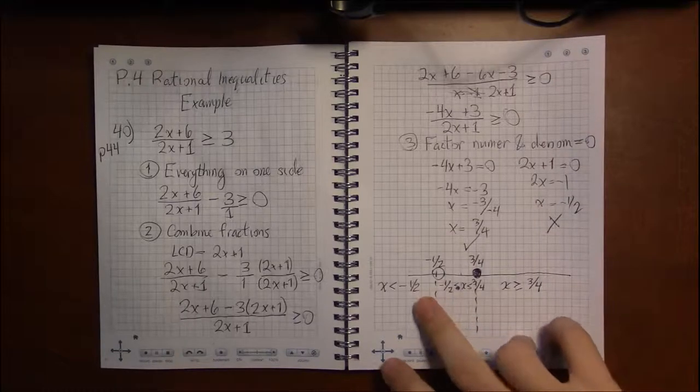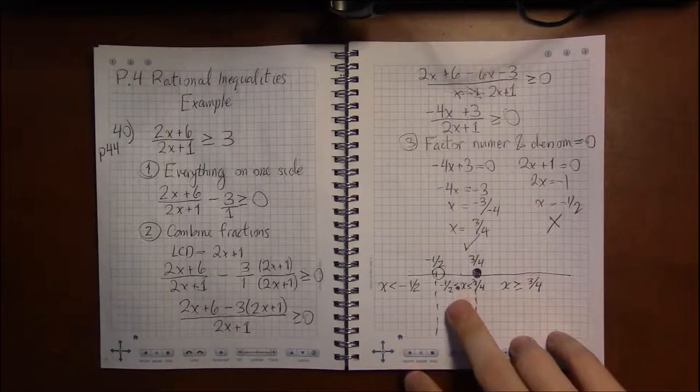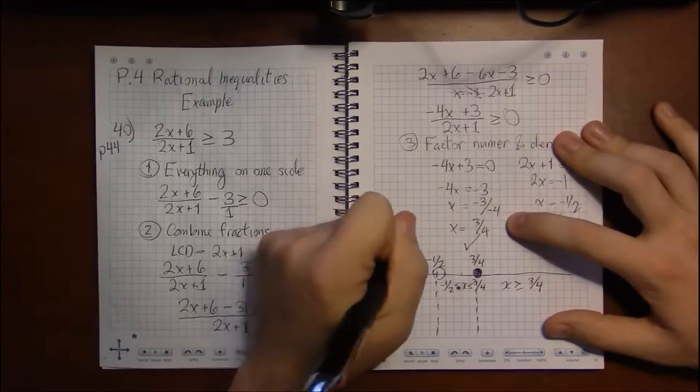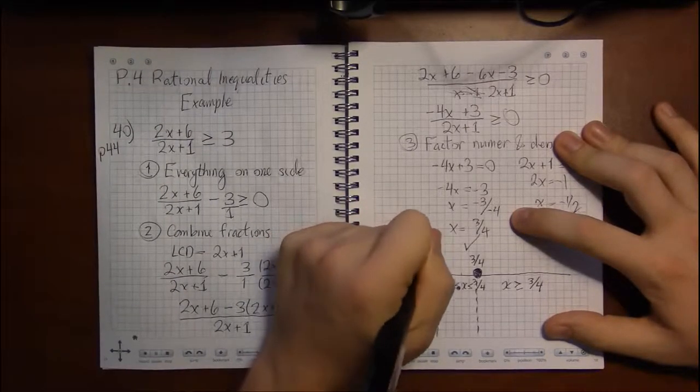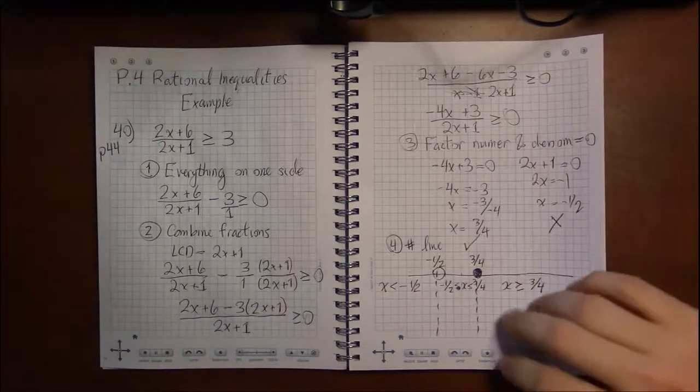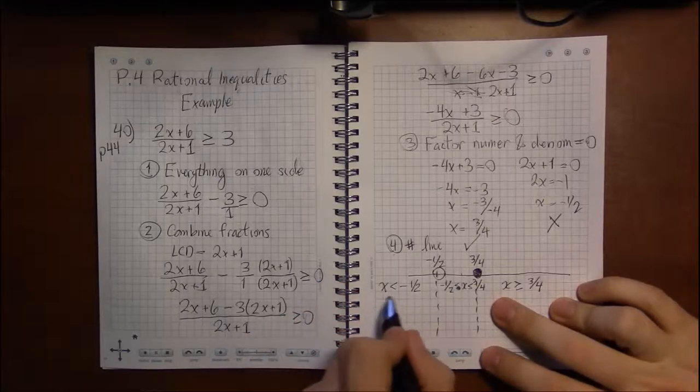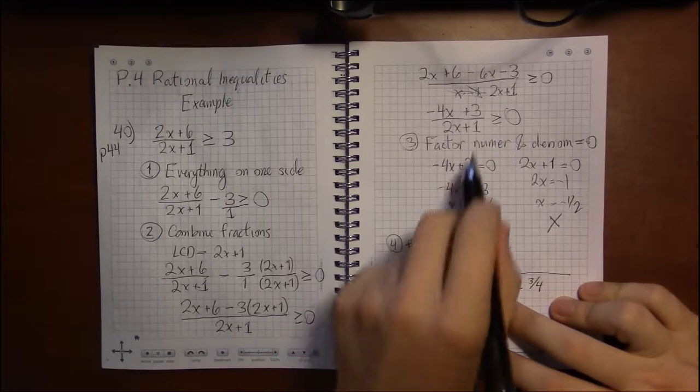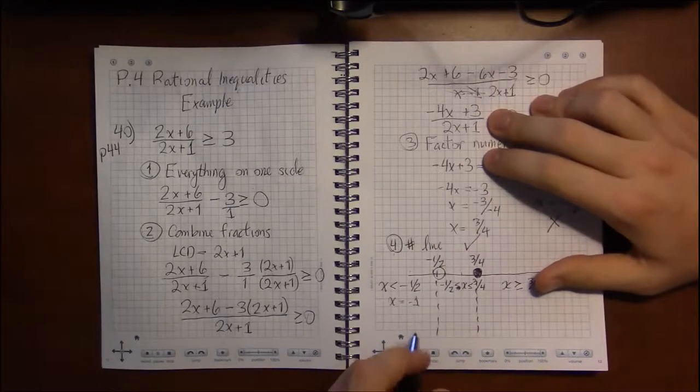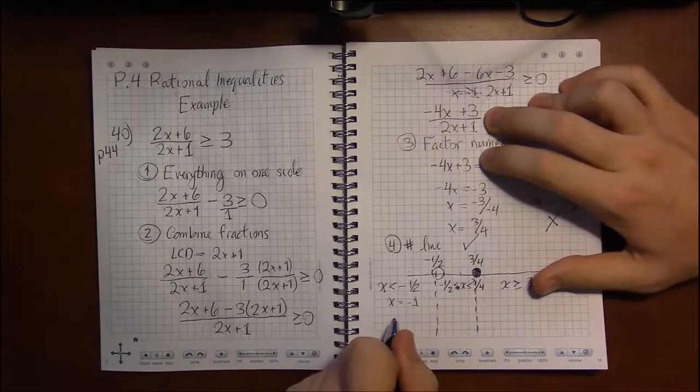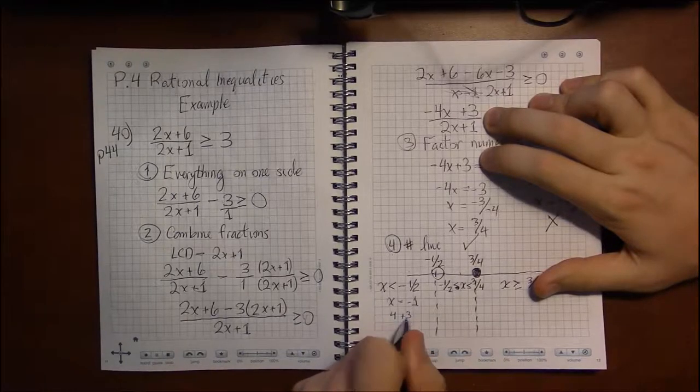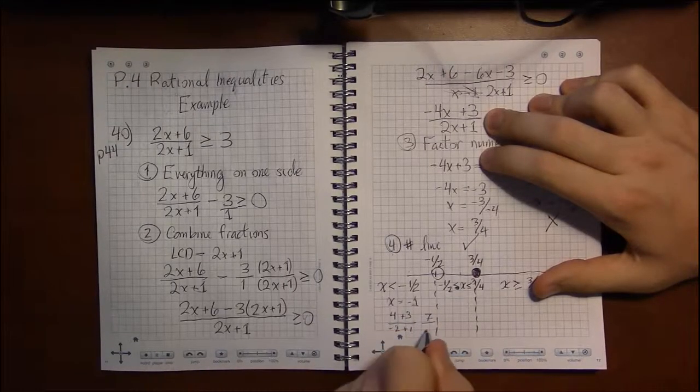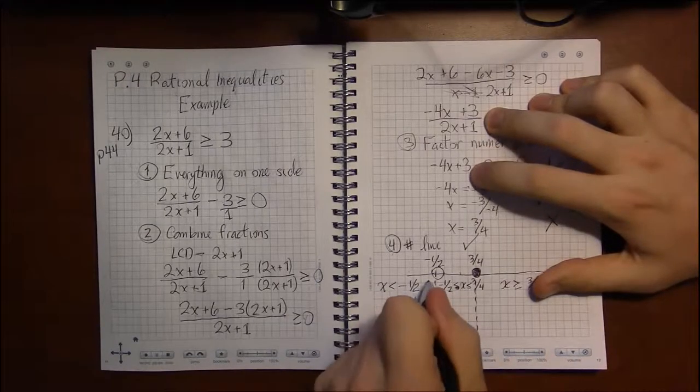Now. We've got the intervals laid out. And we're going to want to plug in test points now. And I forgot to label this. Step. Alright. So. Something less than minus 1 half. How about x equals minus 1. If I plug into this factored form, I'm going to have minus 4 times minus 1 is going to be 4 plus 3 divided by minus 2 plus 1. That's going to be 7 over minus 1. 1 positive over a negative is going to be negative.